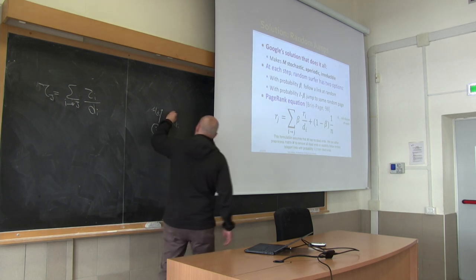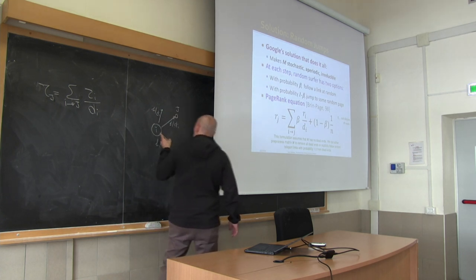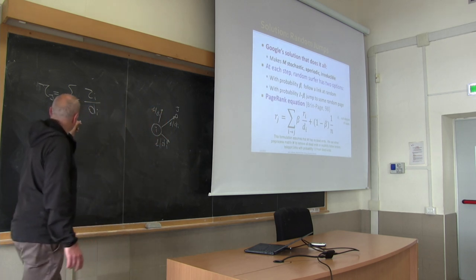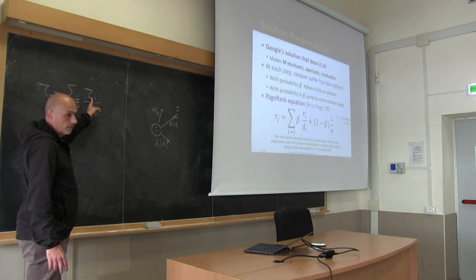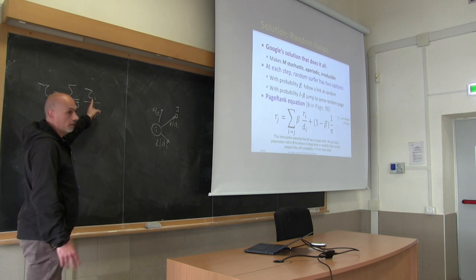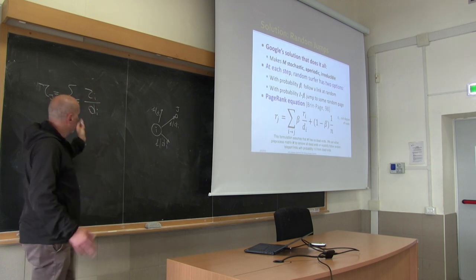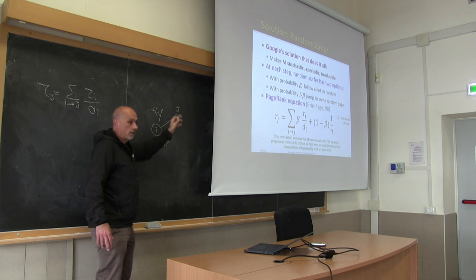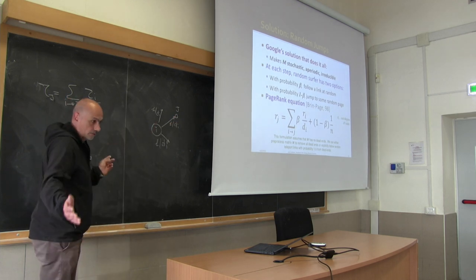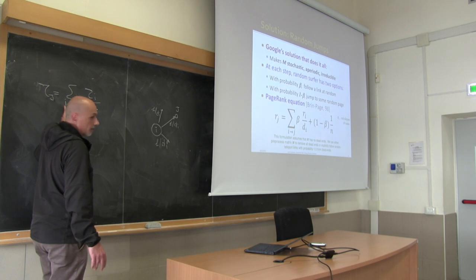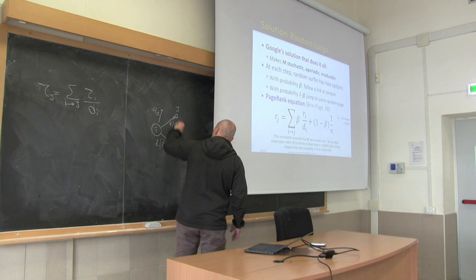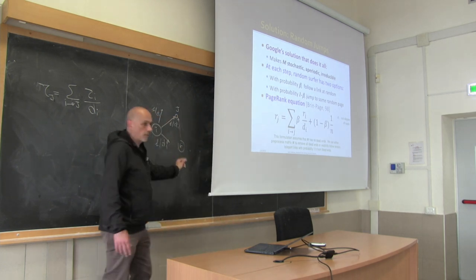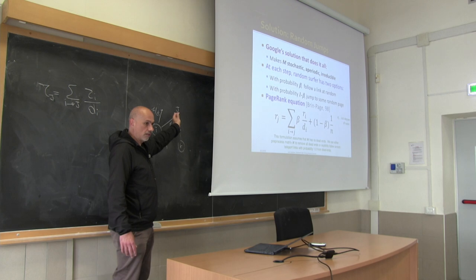Whenever I am at a node, I am going to follow the links with probability inversely proportional to my out-degree. Given that I am in vertex i at any round, in the next round I will be in j with probability equal to 1 over the out-degree of i. You sum over all vertices that have one edge incident in j.